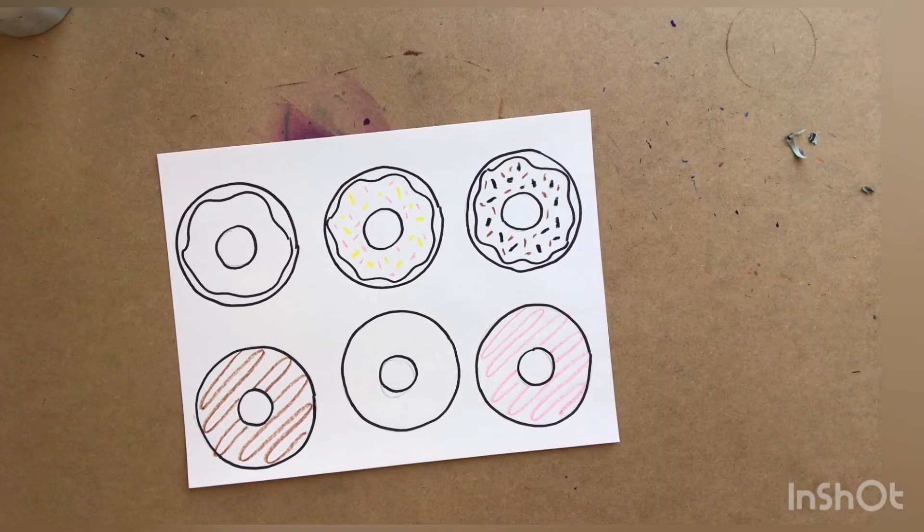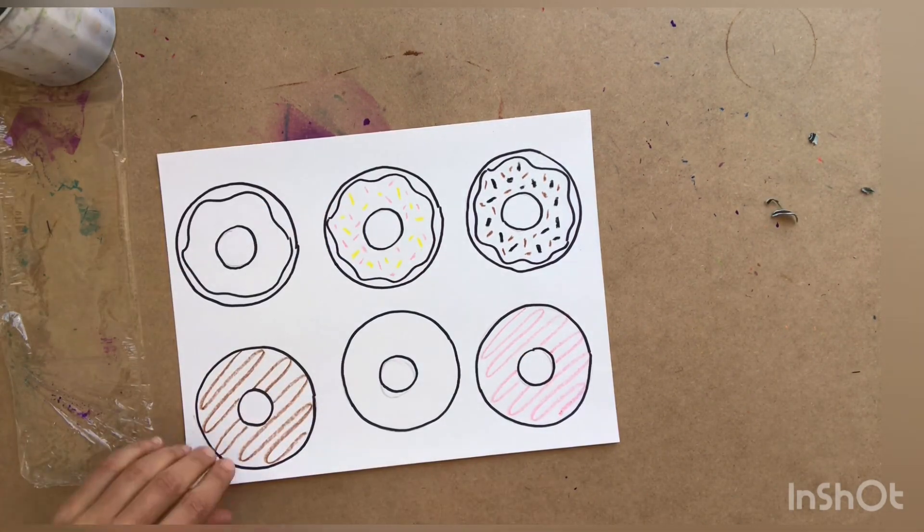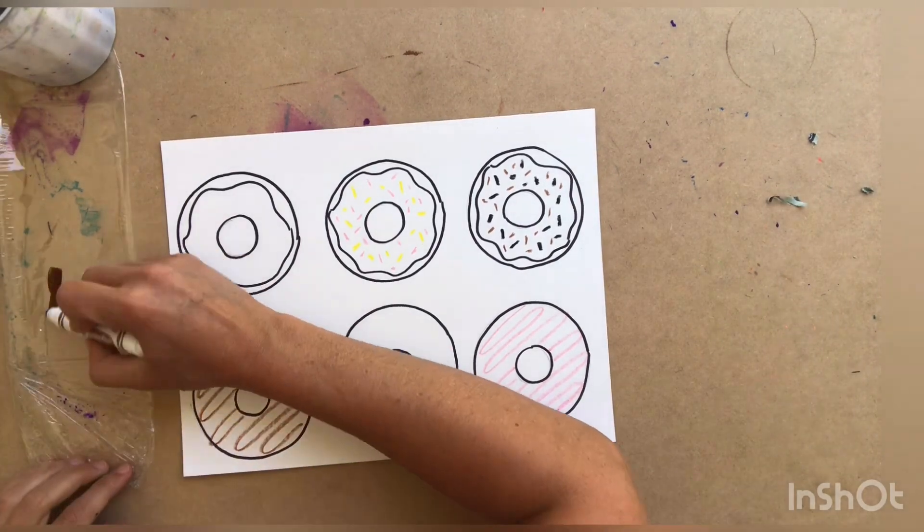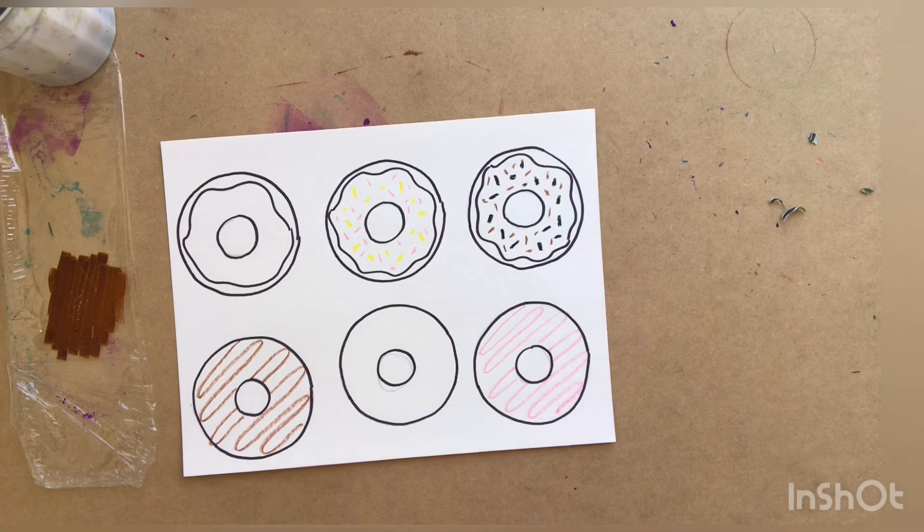I forgot to mention earlier, you're going to want a piece of tin foil or a Ziploc bag to put your paint on. We're going to be using our markers to create the paint. You'll notice my piece of plastic to the left of me. I'm going to put my marker right on top of that like I was drawing on that plastic.